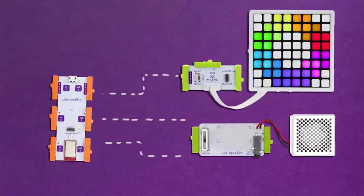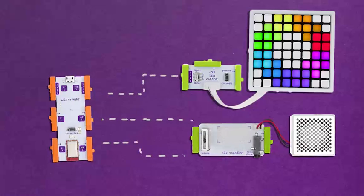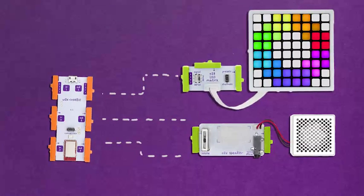Out1 has a special ability. It can send text and images to your matrix. Out2 and Out3 also have special abilities. They can send sound to your speaker.